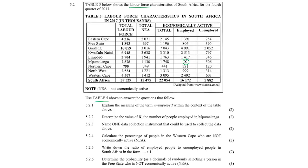Determine the value of x — the number of people employed in Mpumalanga. The total is 1748 and the number unemployed is 506. Finding the difference between 1748 and 506 gives us x, which equals 1242.